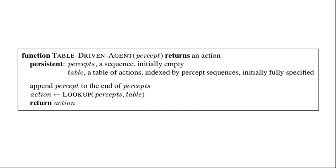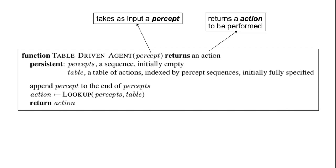As we can see in the pseudocode, the table-driven agent takes as input the current percept and returns the action that needs to be performed. Based on the current percept it does some computation — we will see how that computation is done — and it determines what action needs to be performed. That action is then returned. This is what the table-driven agent's input and output looks like.